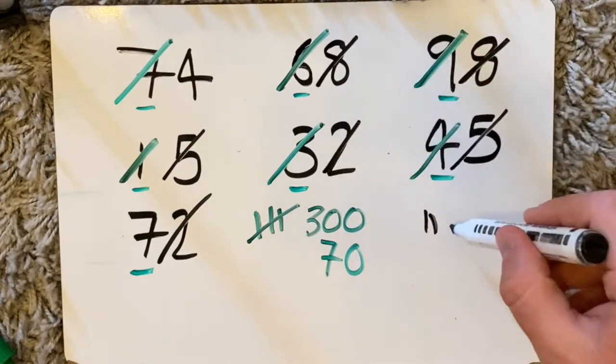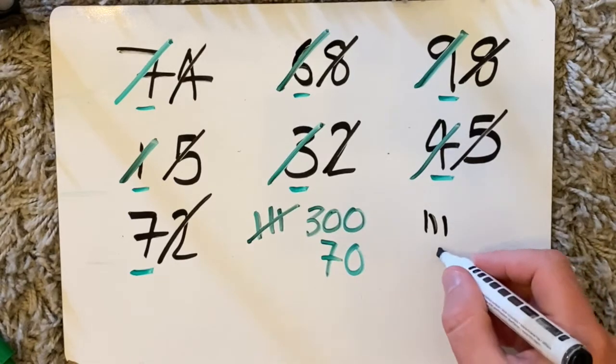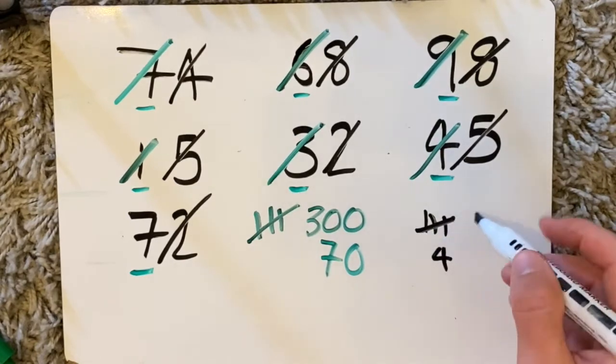8 and 2 again that makes another 10. So I've got 30 so far and then I've got 1 4 on its own. I'm going to change this into 30.